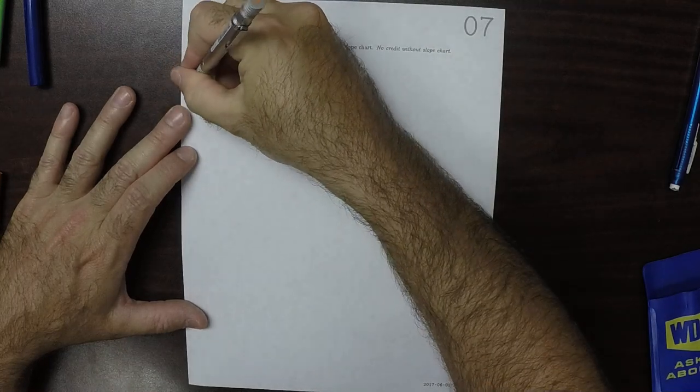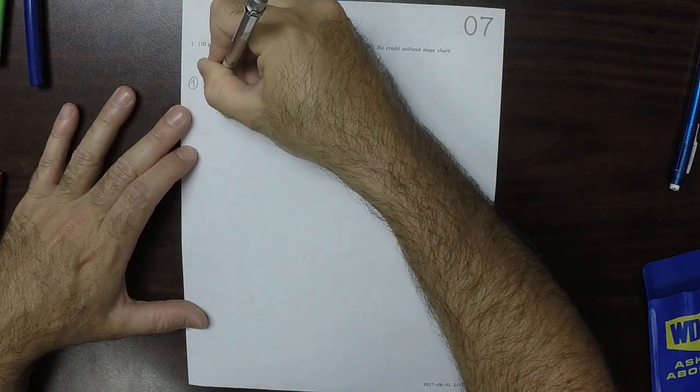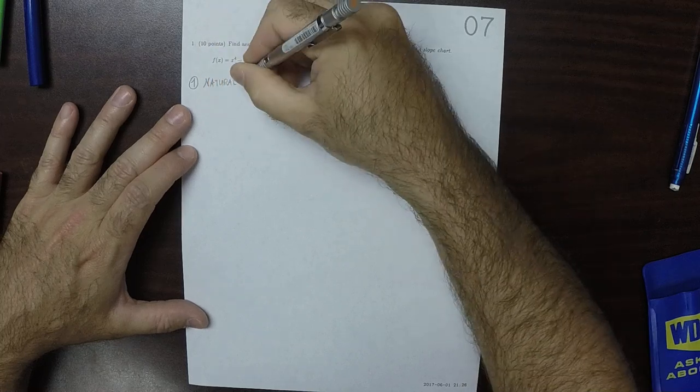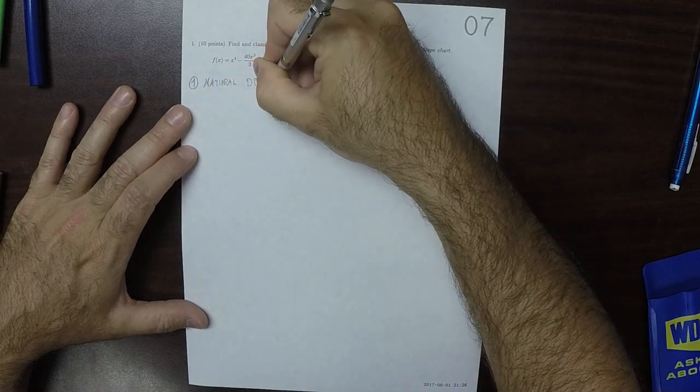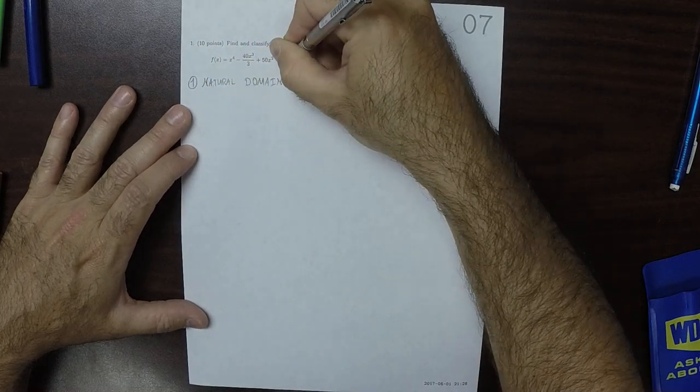The first step is to compute the natural domain of the original function.